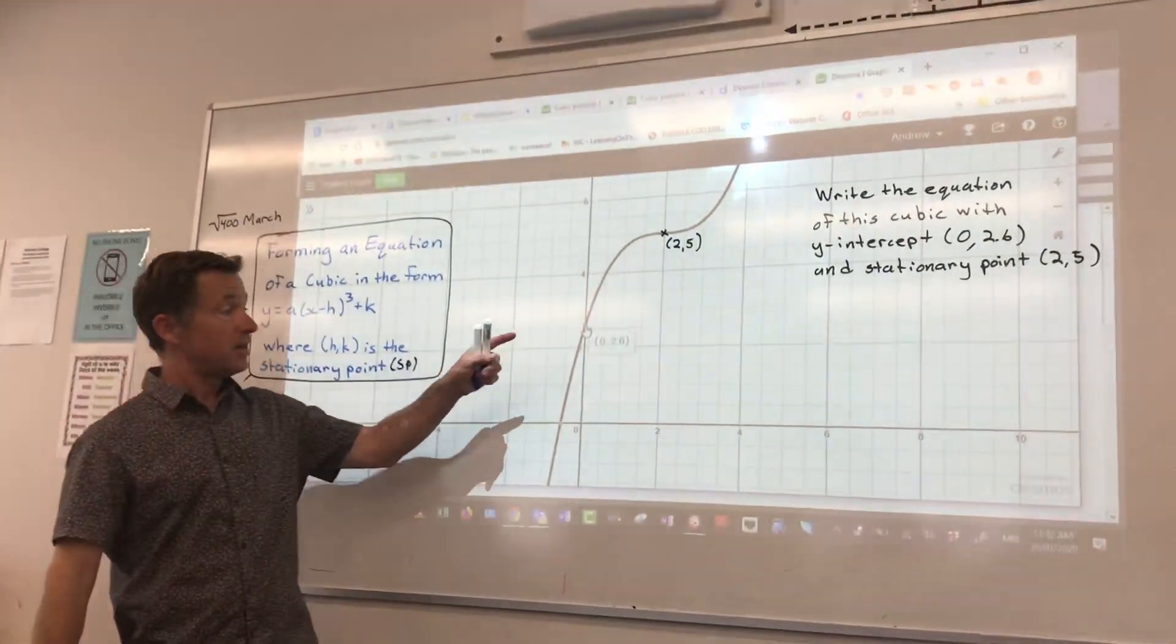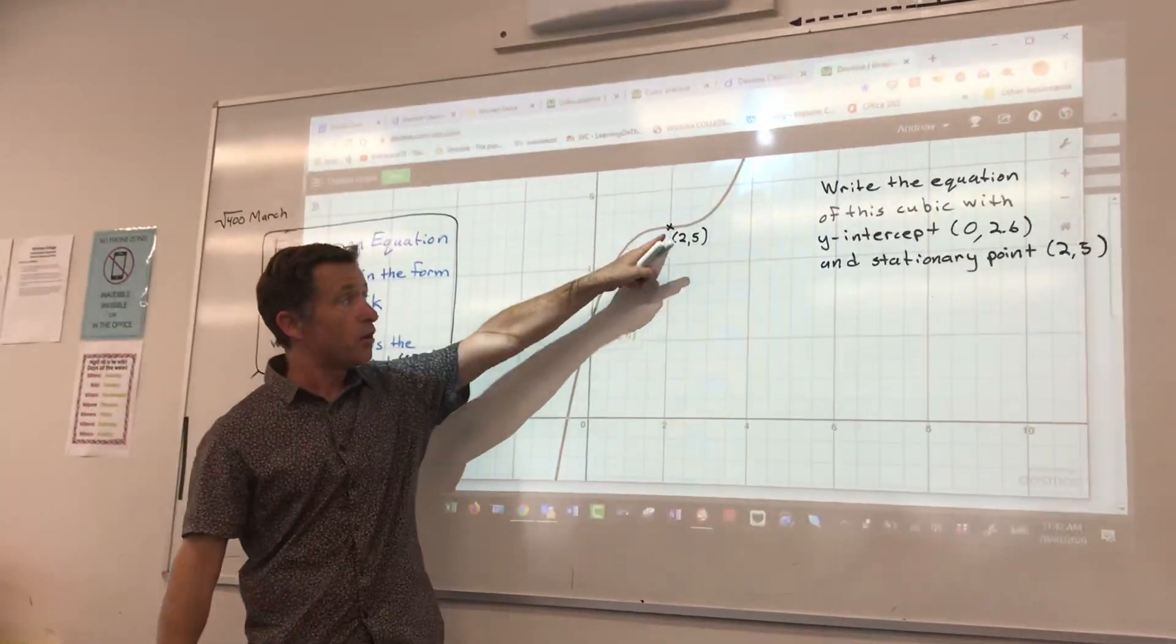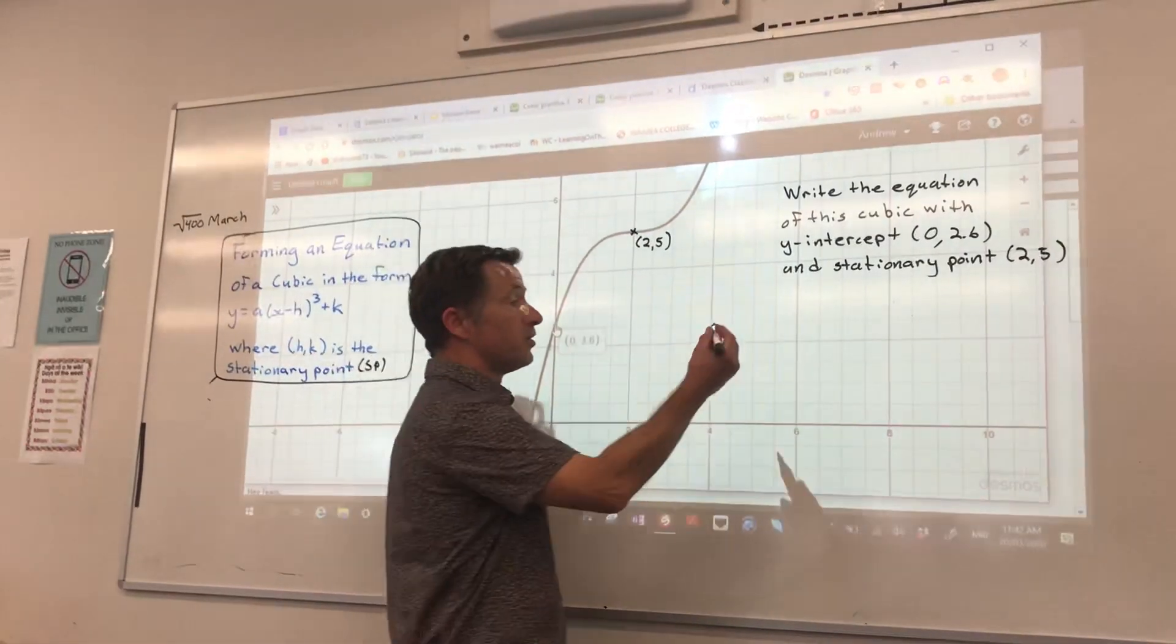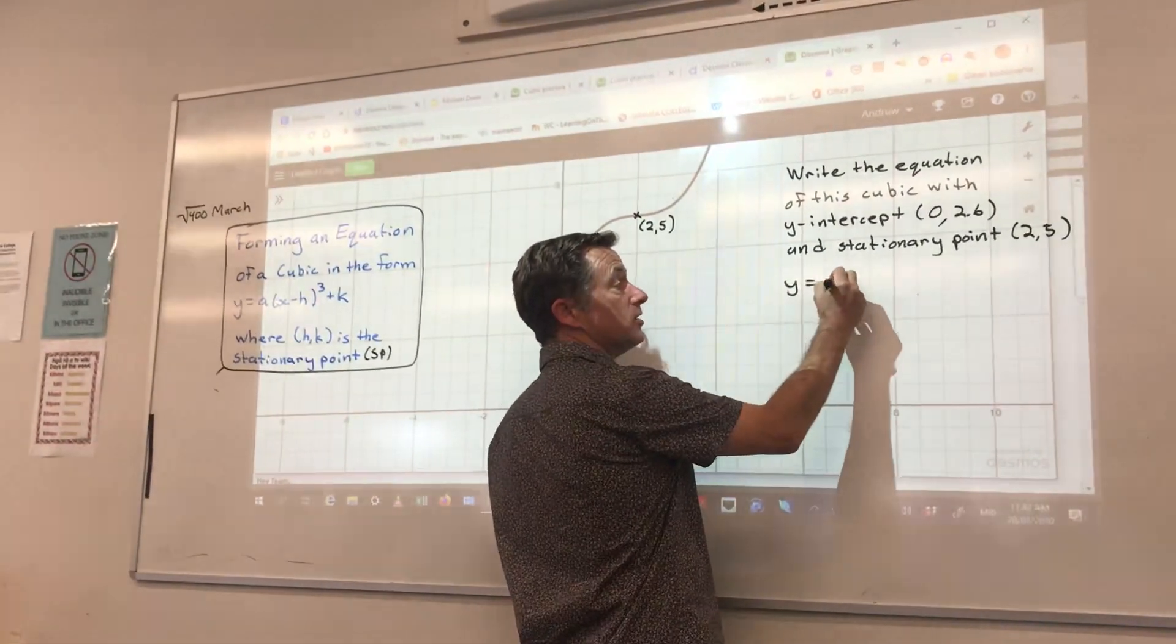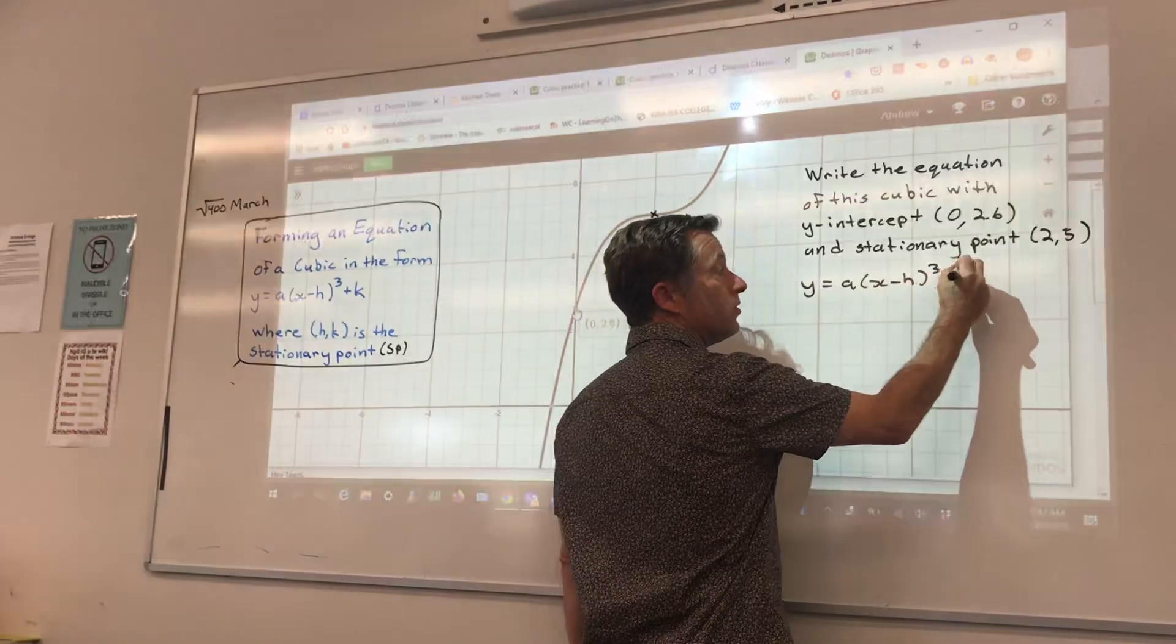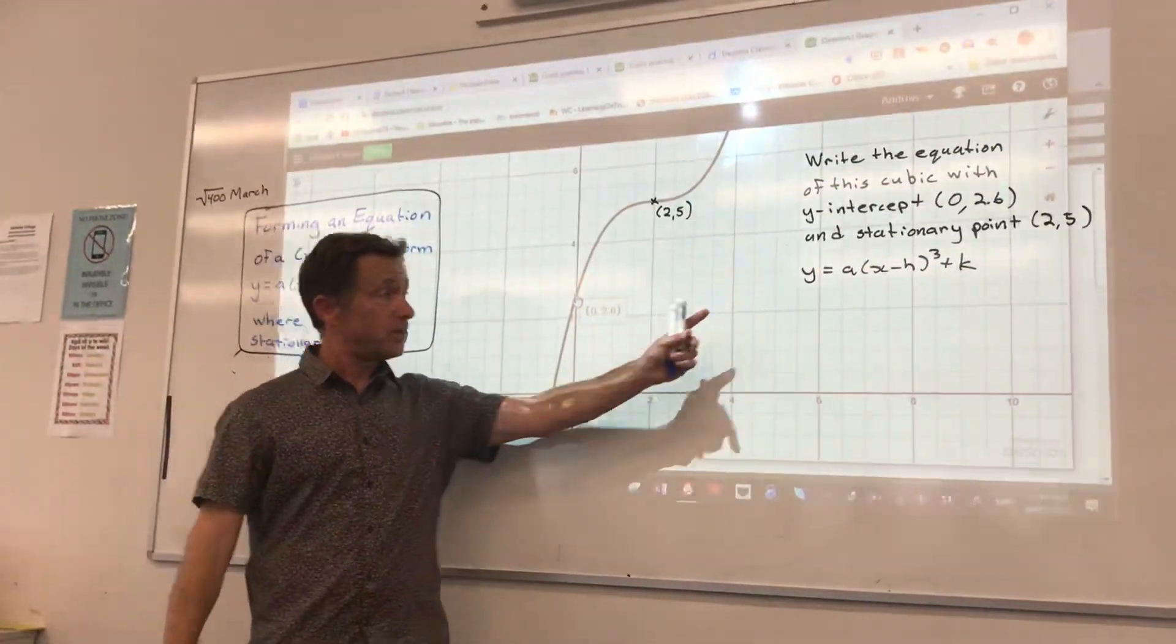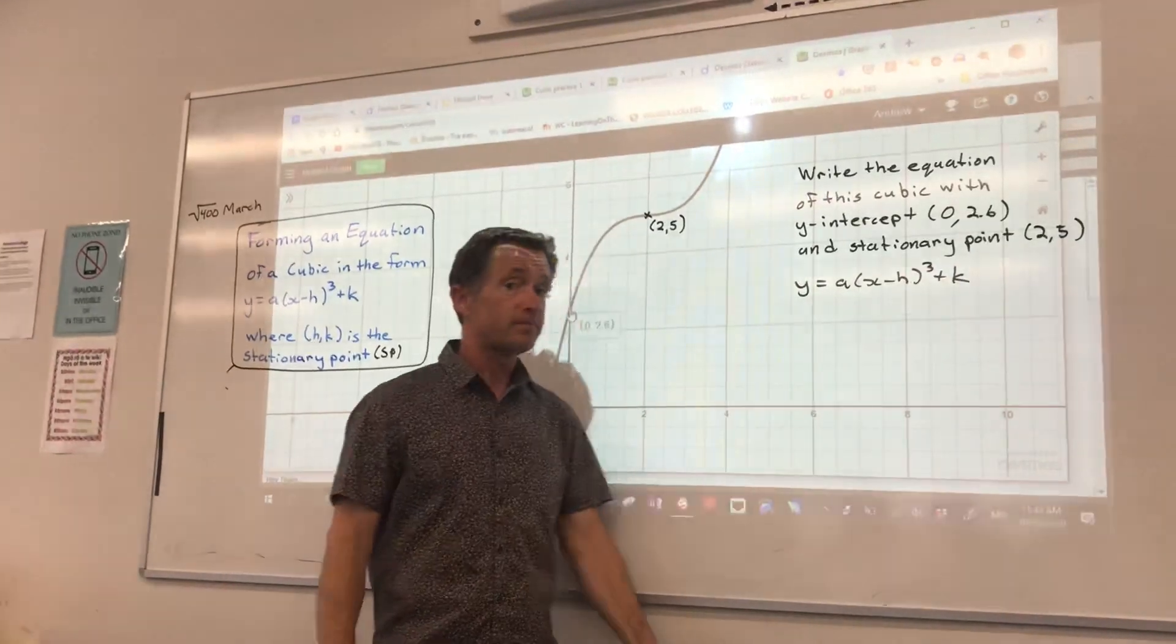All right. So we're going to get the equation of a cubic when I know the stationary point and when I know a y-intercept. And I'll use the general form of that one, which we have over here. And we just played around on Desmos to see what each of these does to the graph.